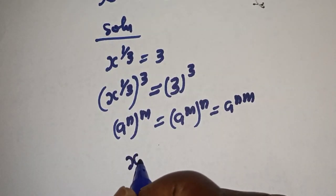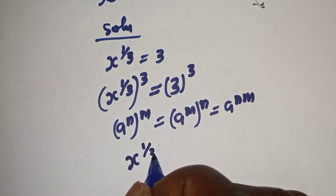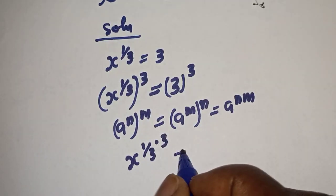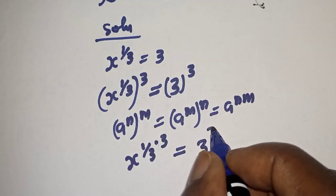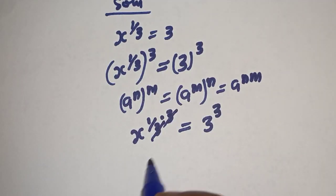This is, x raised to power 1 over 3 multiplied by 3 is equal to 3 raised to power 3. This will cancel this.